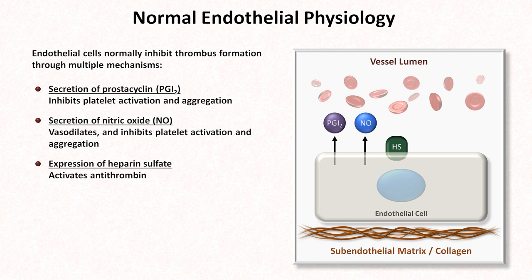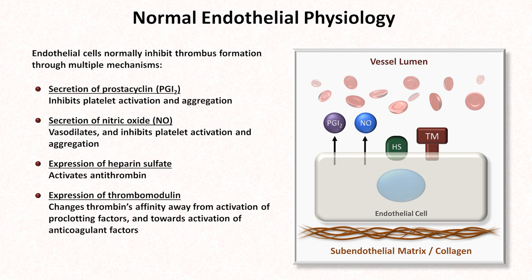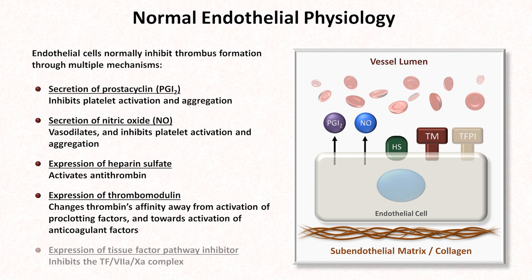Endothelial cells express heparin sulfate, which activates antithrombin, which inactivates several members of the coagulation cascade. They express thrombomodulin, which changes thrombin's affinity away from activation of pro-clotting factors and towards activation of anticoagulant factors. And they normally express tissue factor pathway inhibitor, which inhibits the tissue factor 7A-10A complex.